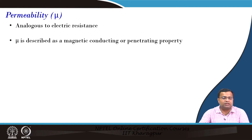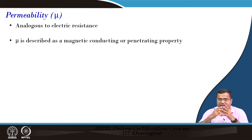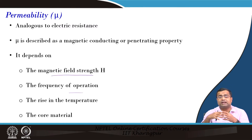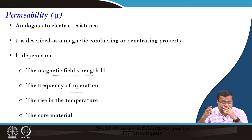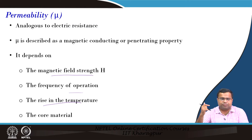Permeability is analogous to electric resistance and is described as magnetic conductance. If the permeability is high, it will pass more lines of force for a given cross-sectional area. It depends on the magnetic field strength and frequency of operation. If you are operating at a higher frequency, the core losses may increase — hysteresis loss and eddy current loss are frequency dependent, so those losses can go up. If temperature increases, the core material matters very much in terms of permeability.